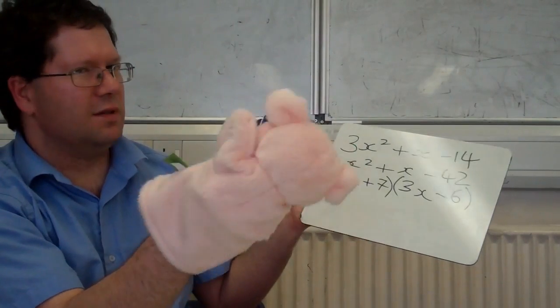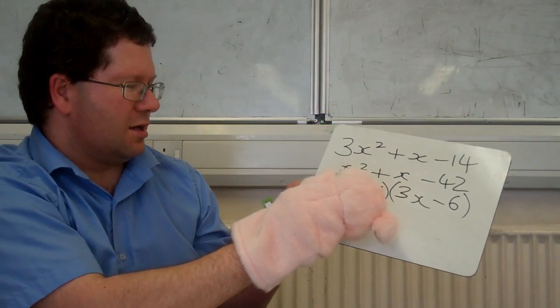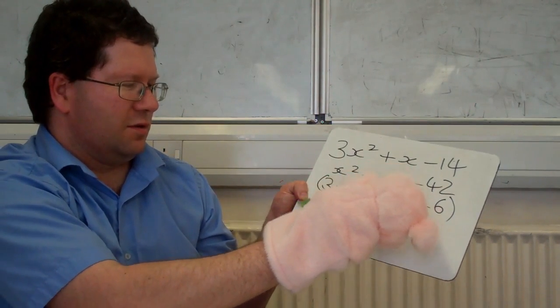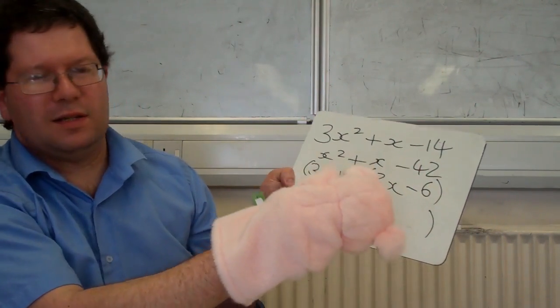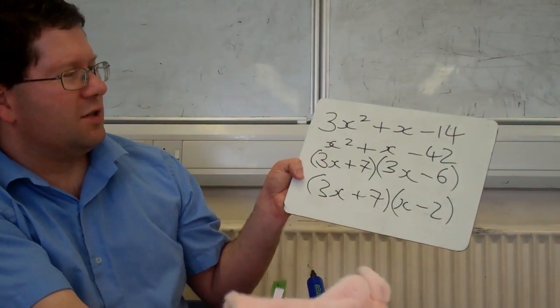So 3x plus 7, nothing apart from 1 goes into those. And then 3x minus 6, well 3 goes into both of those, so you can divide both bits by 3. And you get x minus 2, and that is the factorisation of the thing at the top.